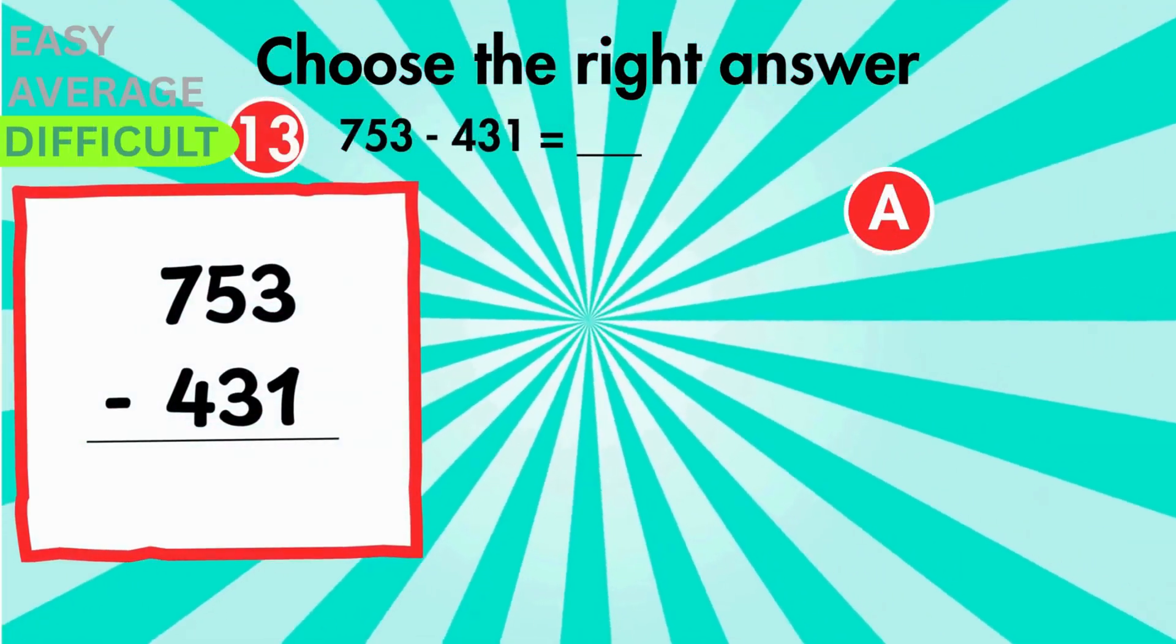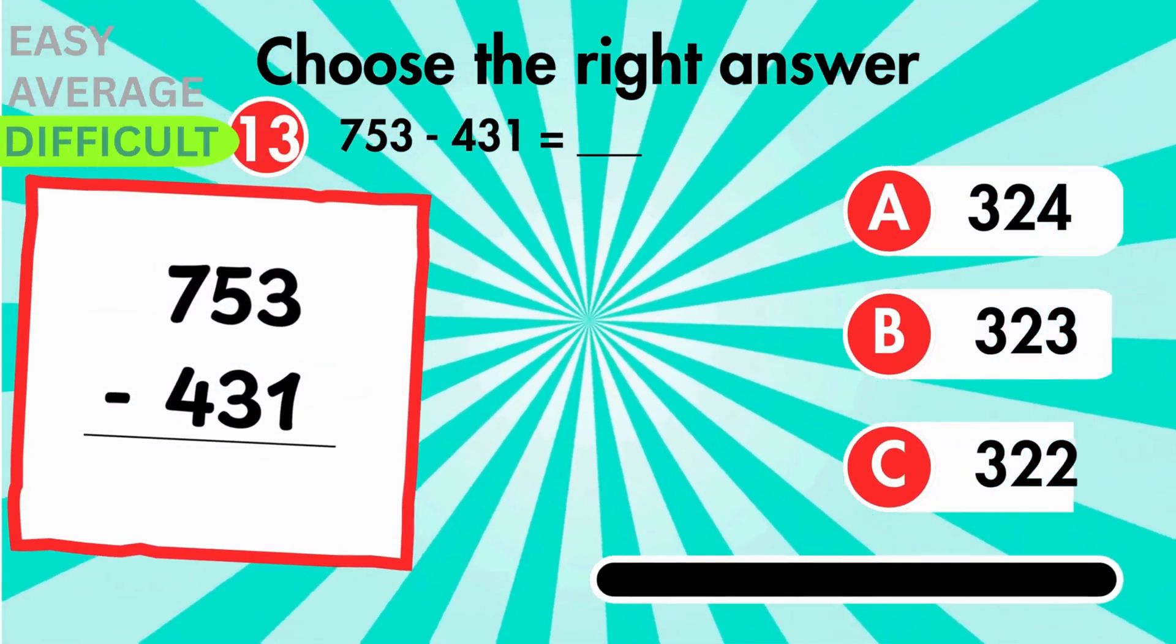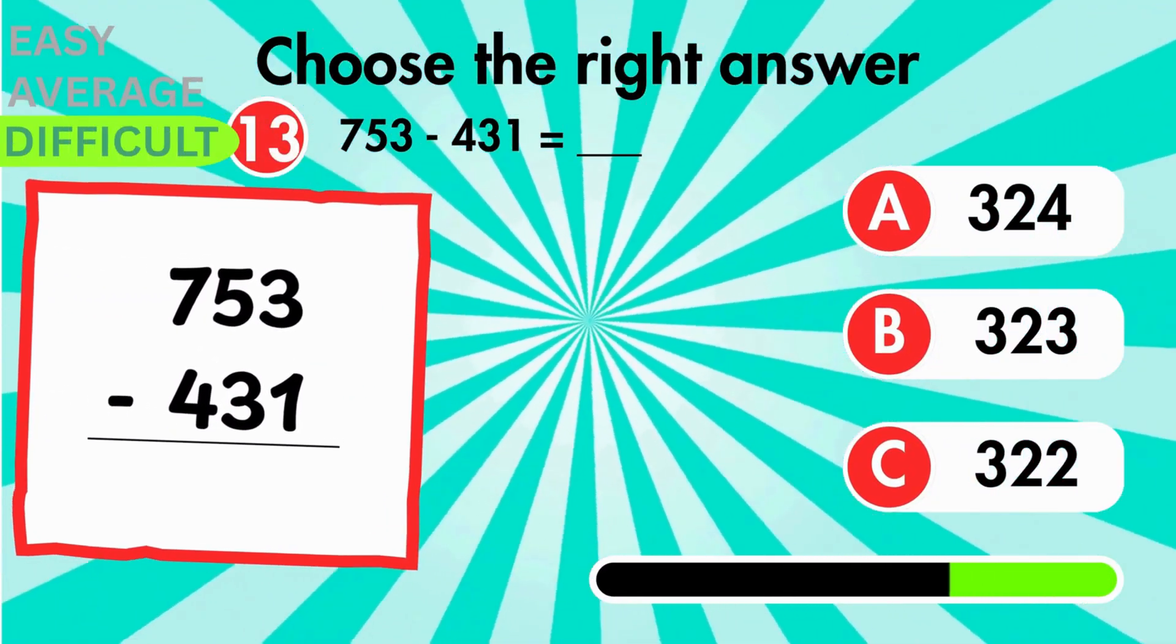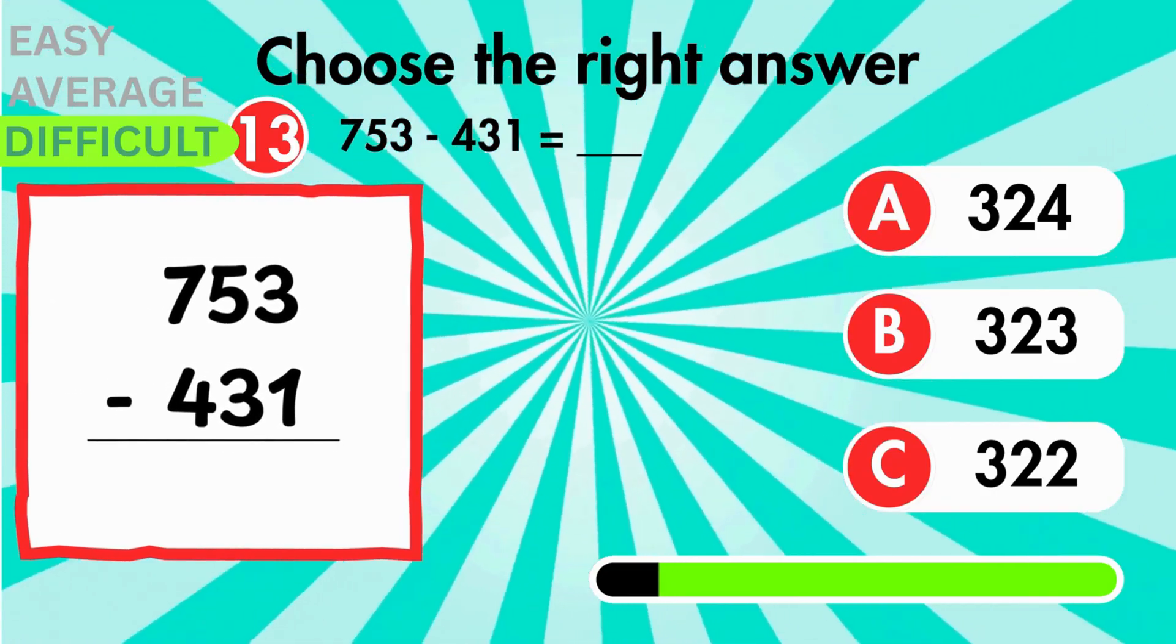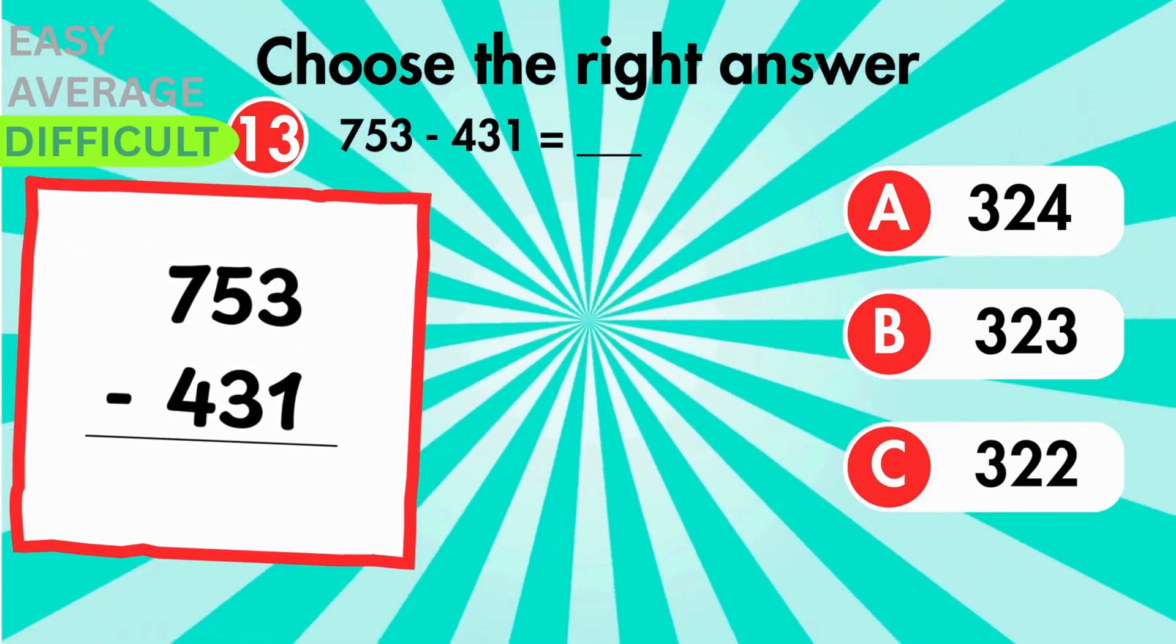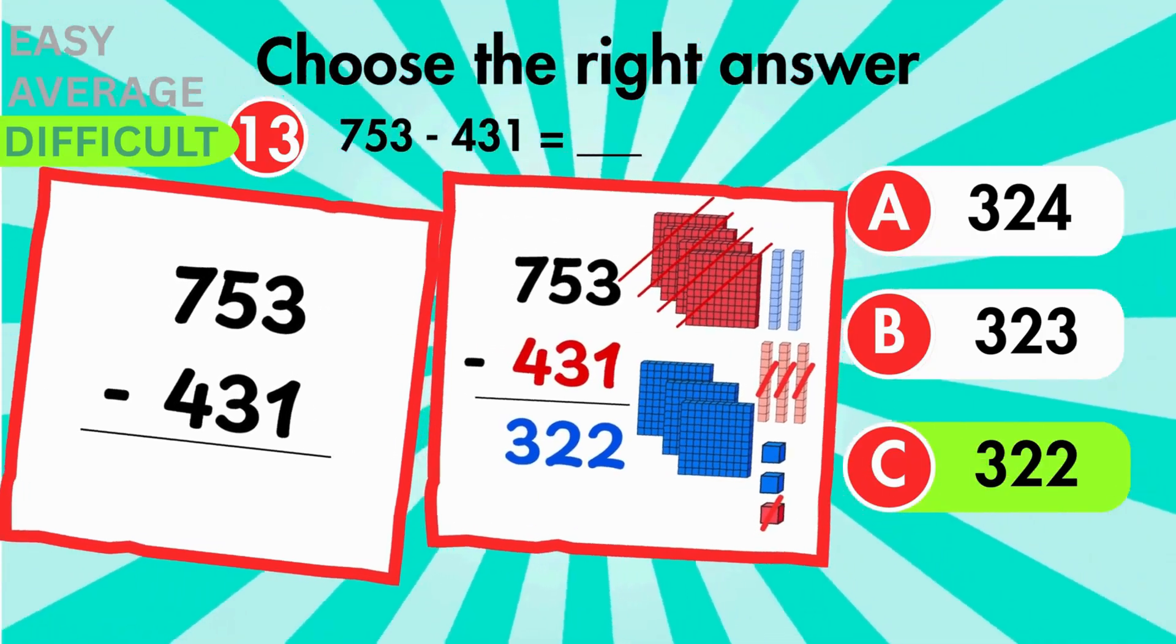Find the difference between 753 and 431. The difference is 322.